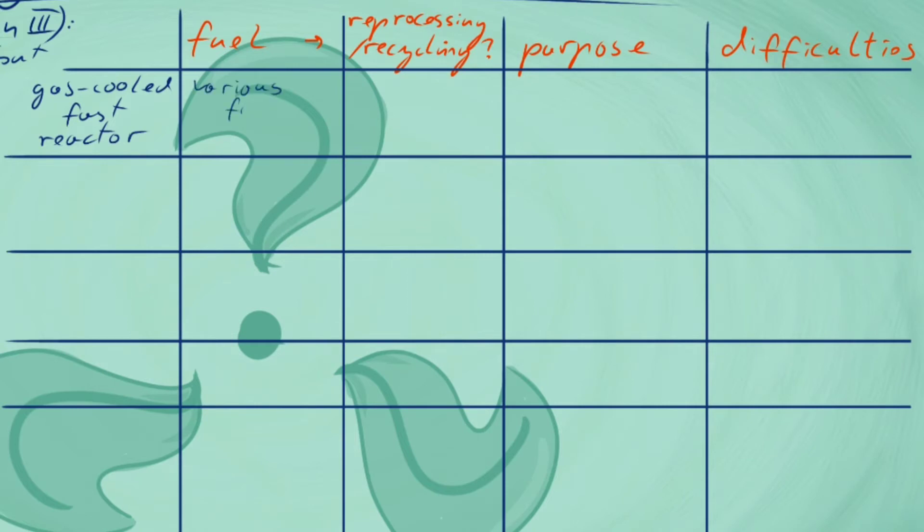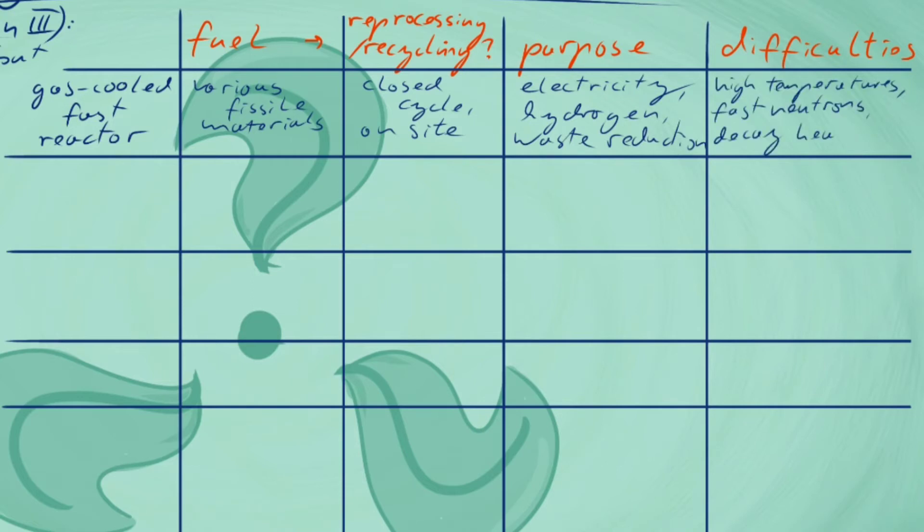Difficulties arise when dealing with extreme heat and pressure, and a significant portion of the research is about materials that can withstand such conditions, as well as the fast neutron damage. Another problem is the high residual decay heat after shutdown with this reactor.